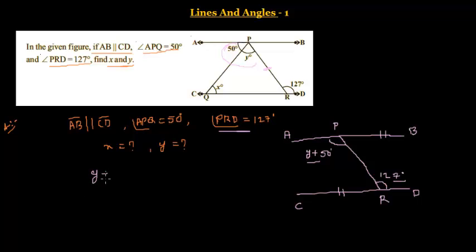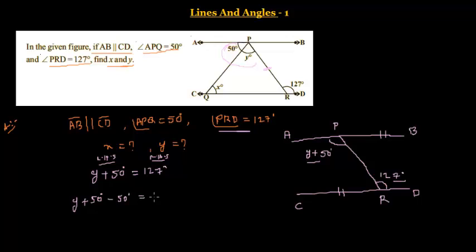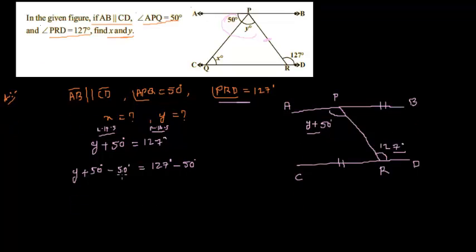The alternate interior angles are always equal. So we can write: Y plus 50 degrees is equal to 127 degrees. We subtract 50 degrees from both sides: Y plus 50 minus 50 equals 127 minus 50. The plus 50 and minus 50 cancel, giving us Y equals 77 degrees. We mark 77 degrees in the figure.